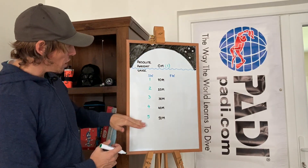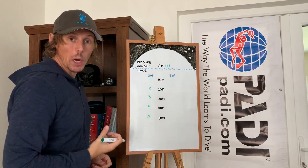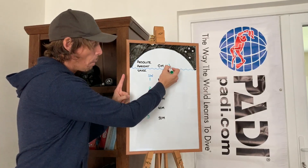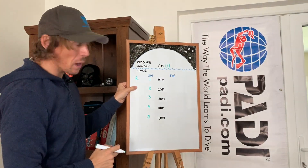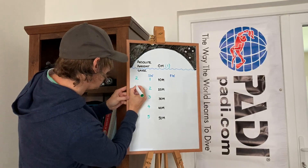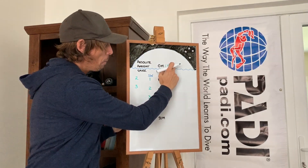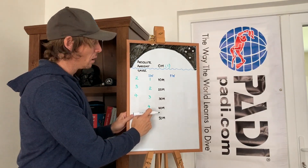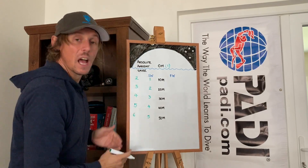So we know gauge pressure. At these depths, to work out absolute and ambient, all it takes is: take the water pressure, then add one. At 10 meters it's one atmosphere plus one, giving two. At 20 meters, two plus one is three. At 30 meters, three plus one is four. At 40 meters, four plus one is five. At 50 meters, that would be six, and so on.